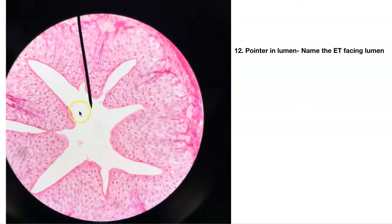Number twelve — pointer in the lumen. What's this epithelial tissue? Here's the epithelial tissue, basement membrane somewhere around here. It's stratified — but look at the top layer: weird dome-looking cells. This is transitional.